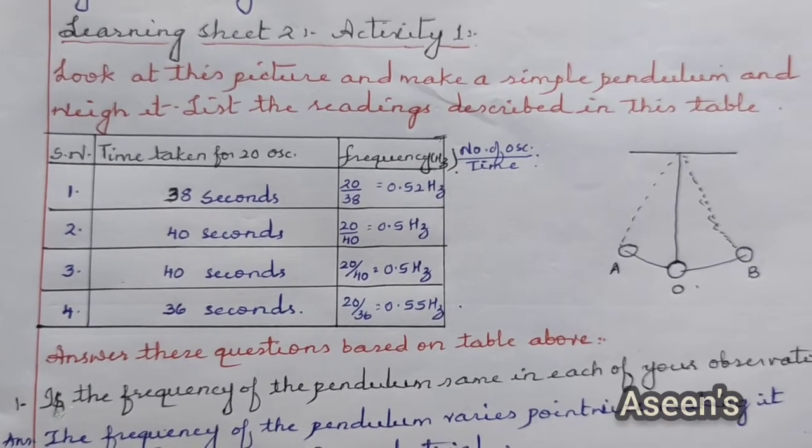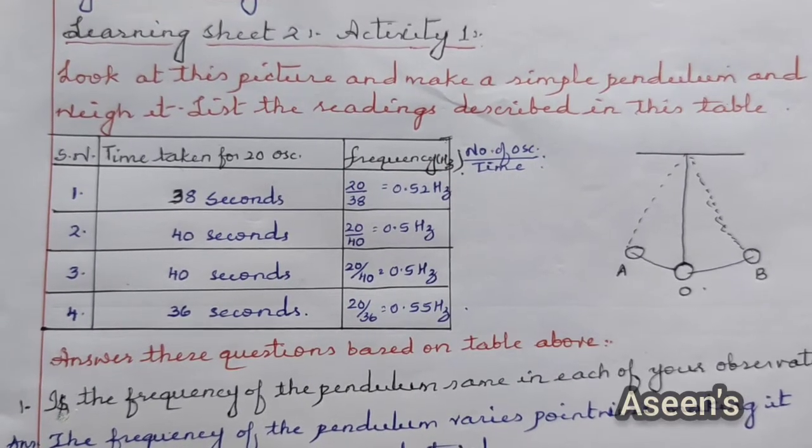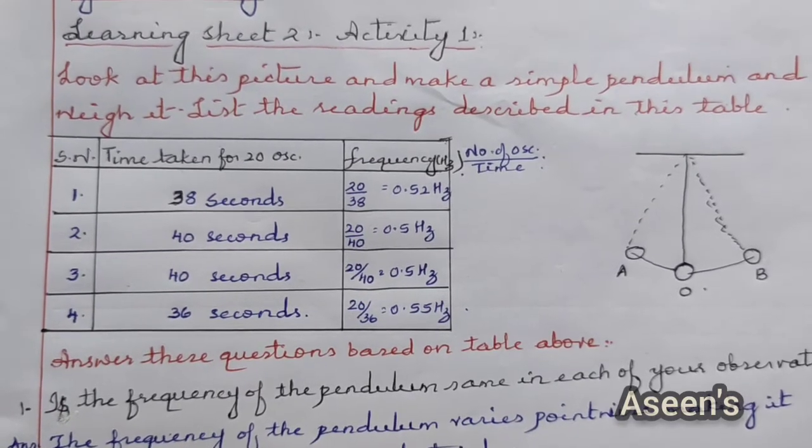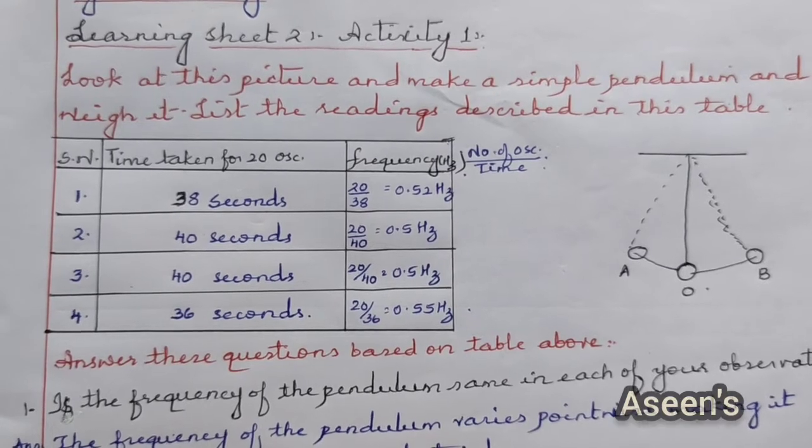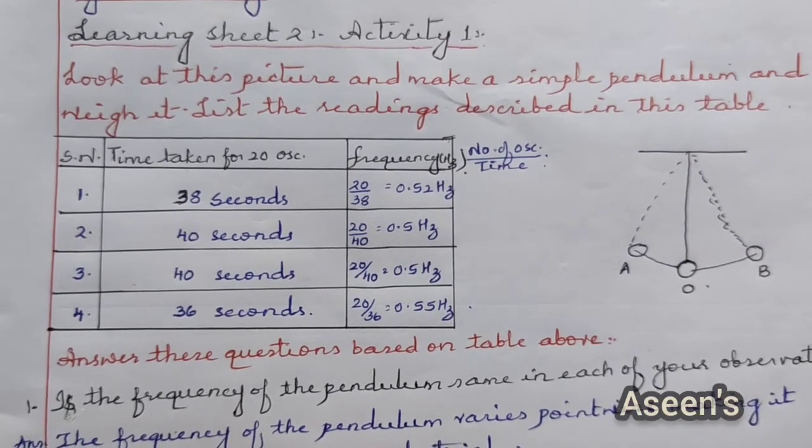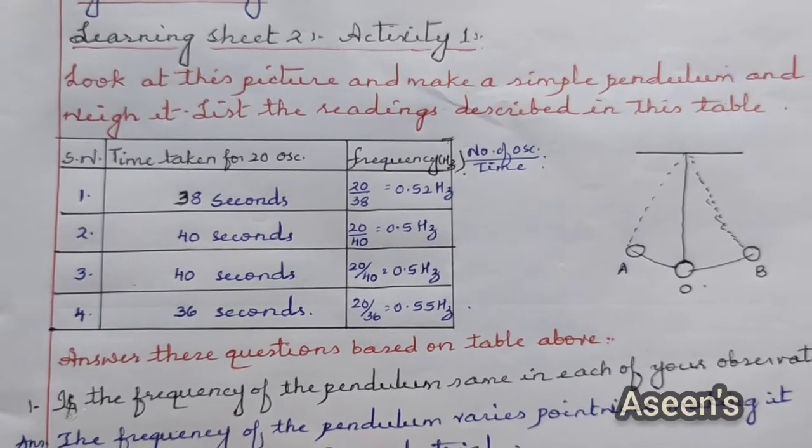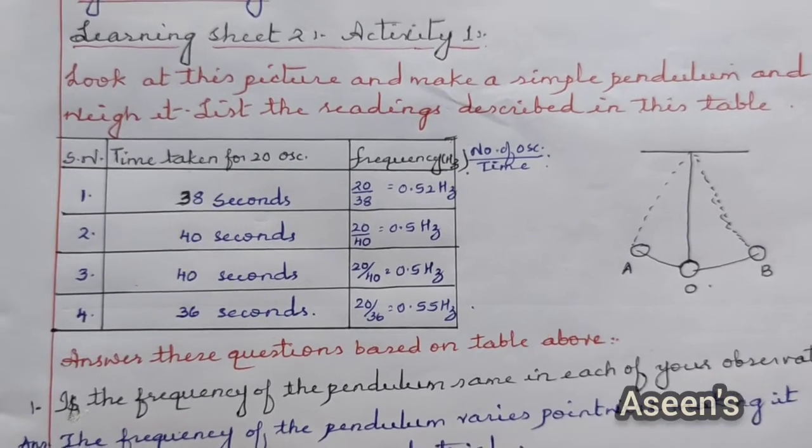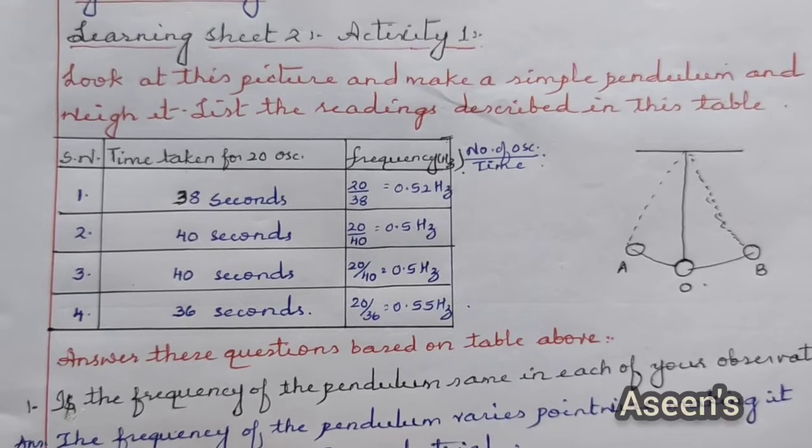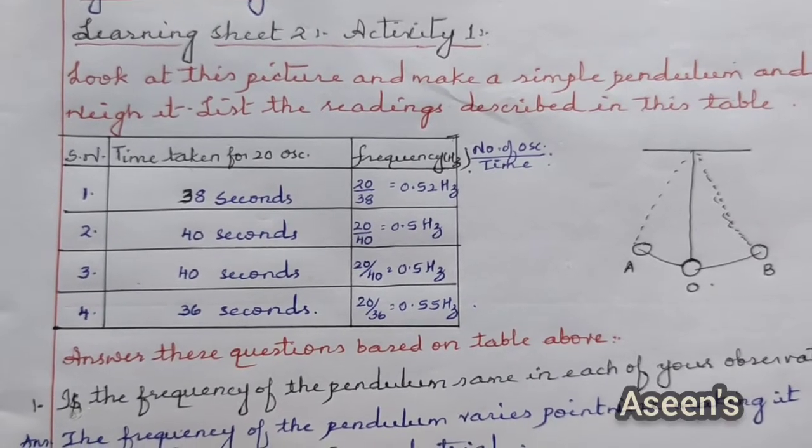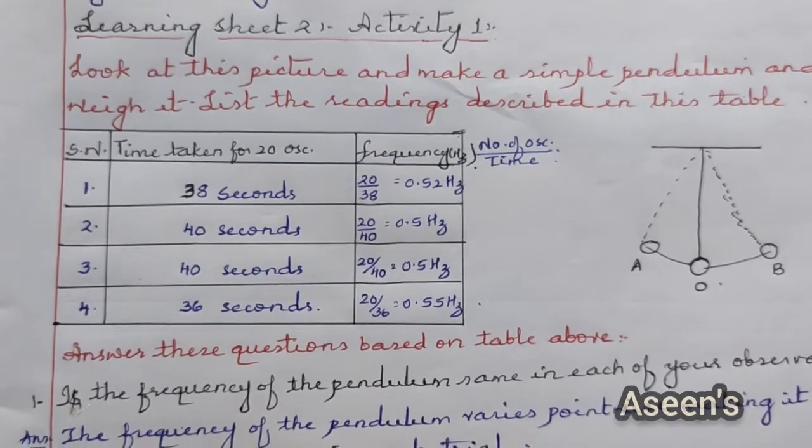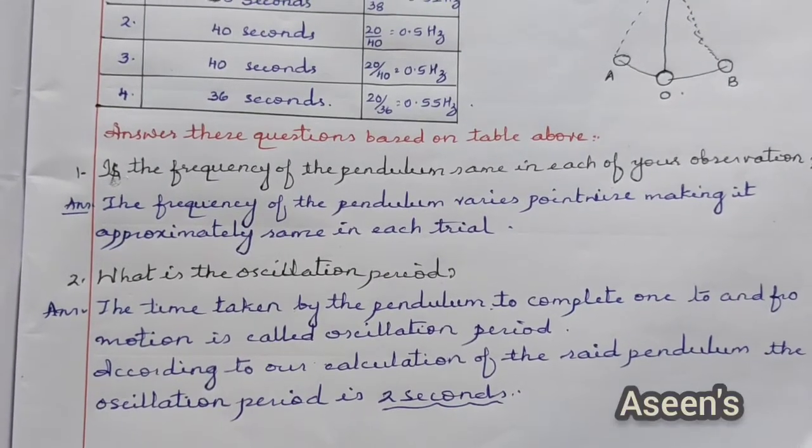Frequency for the first one will be 20 oscillations divided by 38 seconds. The answer is 0.52 hertz. For the second and third one, 20 by 40 equals 0.5 hertz. And for the fourth one, 36 seconds, 20 by 36, which is equal to 0.55 hertz.